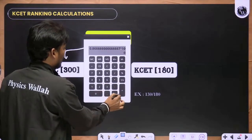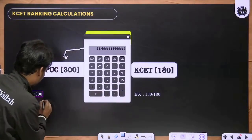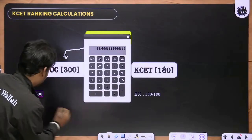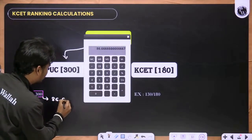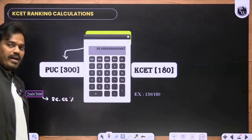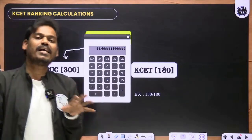So multiply by 100. It is 86. So what is your percentage? Out of three subjects, it is 86.66 percent. Out of this, 50 percent will count.